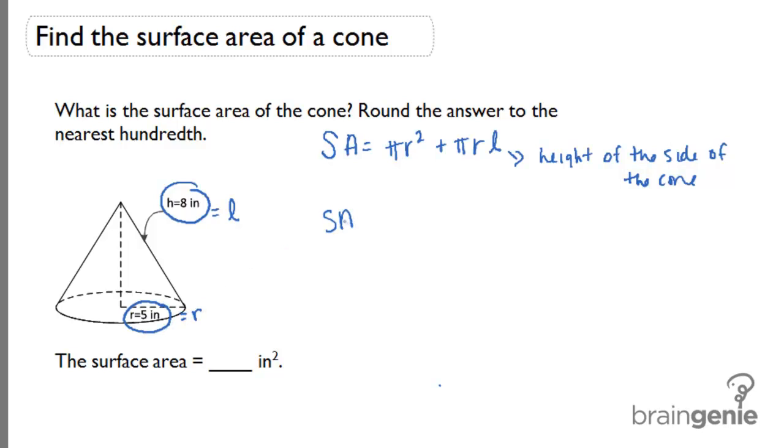Let's plug those values into the formula. We'll have pi times radius squared, 5 squared, plus pi times 5 times 8. And remember, we use pi equals approximately 3.14 in our calculations.